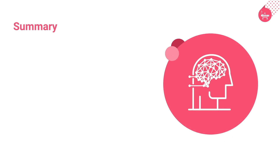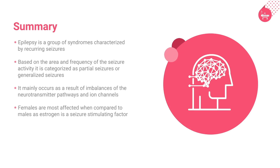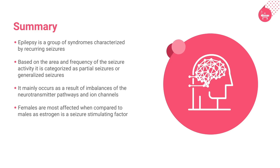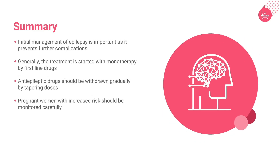In summary, epilepsy is a group of syndromes characterized by recurring seizures, categorized as partial or generalized based on the area and frequency of seizure activity. It mainly results from imbalances of neurotransmitter pathways and ion channels, with females more affected due to estrogen's seizure-stimulating effect. Treatment begins with monotherapy using first-line drugs, and anti-epileptic drugs should be withdrawn gradually by tapering doses. Pregnant women with increased risk should be monitored carefully.